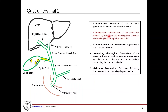Cholecystitis — itis means inflammation — is inflammation of the gallbladder caused by bile buildup from gallstone obstruction of the cystic duct. Choledocholithiasis — choledocho refers to the common bile duct — is simply the presence of a gallstone in the common bile duct. There's not necessarily a significant obstruction yet; the patient isn't quite at the point of infection or inflammation. On ultrasound you might see some dilation or the stone itself.